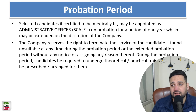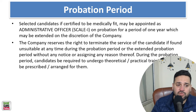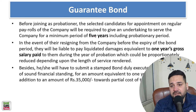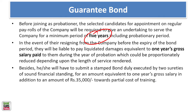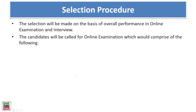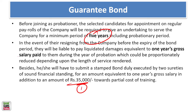There is a probation period of one year, after which you will be made permanent. There is also a guarantee bond of five years. If you want to quit before five years, you need to pay one year's salary plus GST plus a training fee of ₹35,000. That is what you need to pay back if you quit before the five-year period, which includes the probationary period.